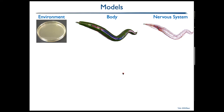Most experimental work on C. elegans is performed in agar gel in a petri dish, so our environment model basically models agar in a dish. Because of the low Reynolds numbers at which C. elegans operates in agar, we can model the gel with a linear drag force — the resistive forces dominate and inertial forces play no significant role. We can also impose various gradients on the agar, such as temperature and salinity gradients.